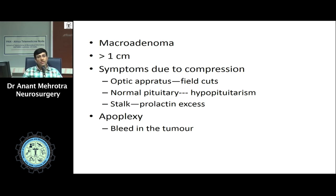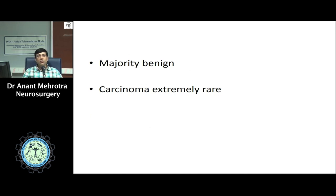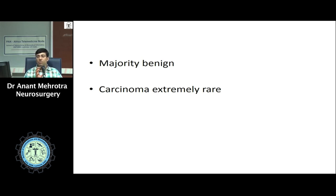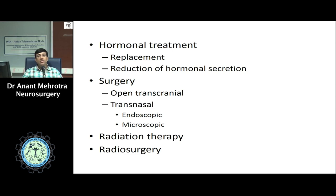The investigation of choice for meningiomas is CT scan or MRI. On CT, they are classically iso- to slightly hyperintense. On MRI T1, they are iso- to slightly hyperintense; on T2, they are hyperintense; and on contrast, they show intense enhancement. Depending on tumor location, additional investigations may be needed — for instance, MR venography if the tumor is close to a sinus, or MR angiography if the tumor is near the sylvian fissure to assess the relationship with the internal carotid artery, anterior cerebral artery, and middle meningeal artery. Complete excision is the treatment of choice for meningiomas and no further treatment modality is usually required.